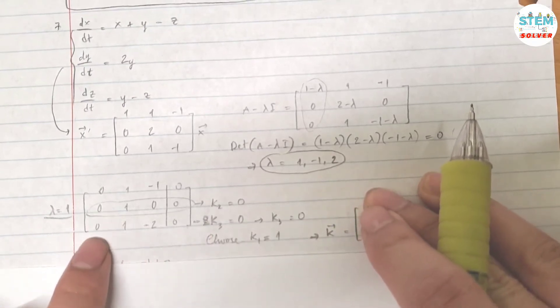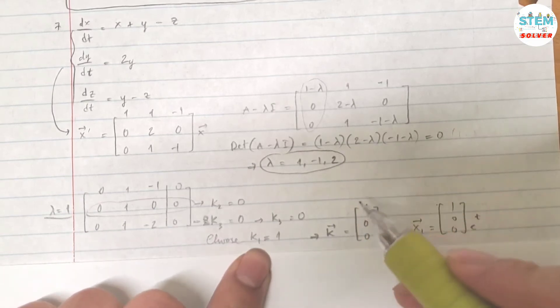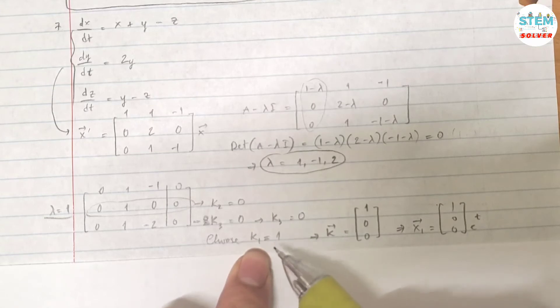So k3 is 0 again. For k1, it's everything. So if I choose k1 equals 1, you can choose whatever value for k1, but I like to choose the standard number. Do not choose 0, because it's gonna give you a null matrix. My vector k1 is 1, 0, 0.